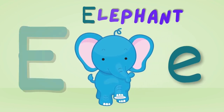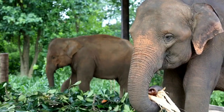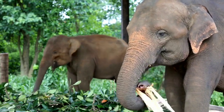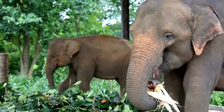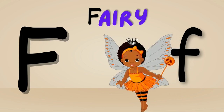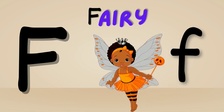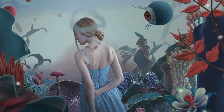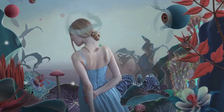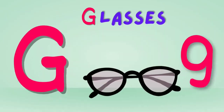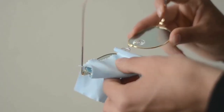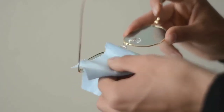E is for Elephant. Elephant, elephant — this is an elephant. F is for Fairy. Fairy, fairy — this is a fairy. G is for glasses. Glasses — this is the glasses.